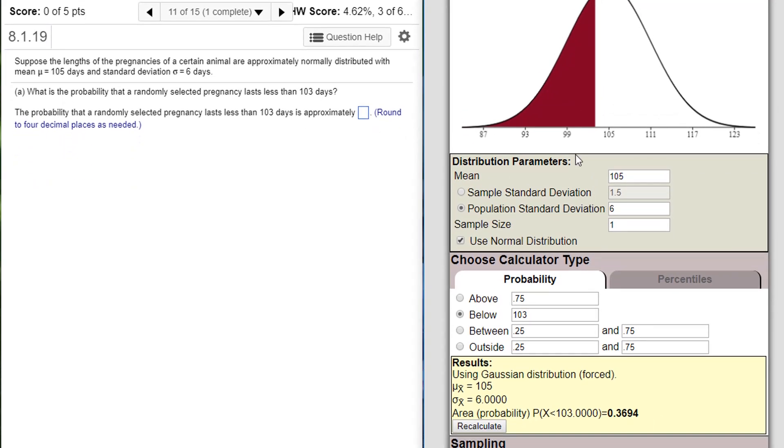That's the probability in this distribution with a sample size of one: 0.3694.